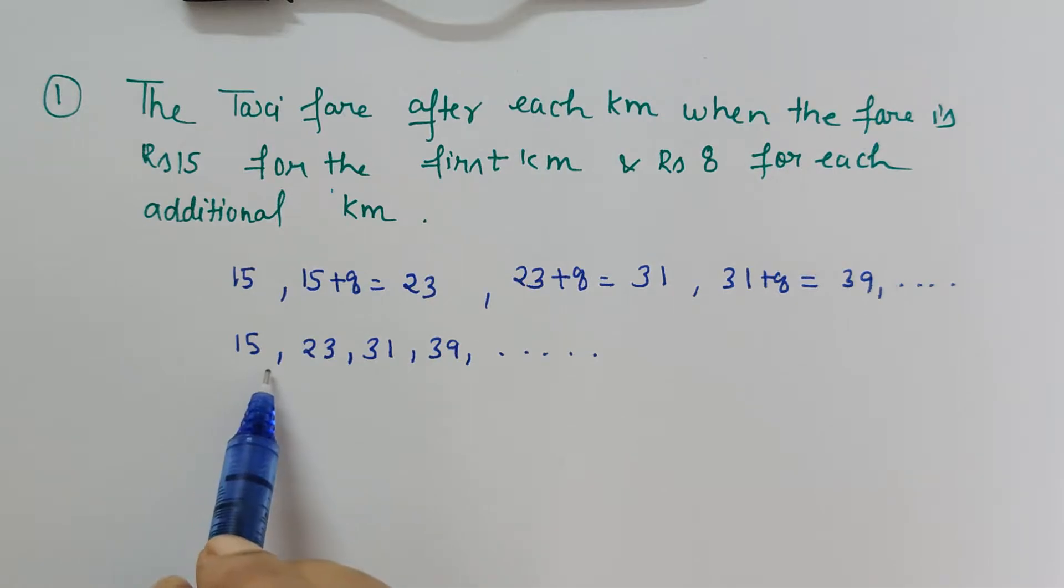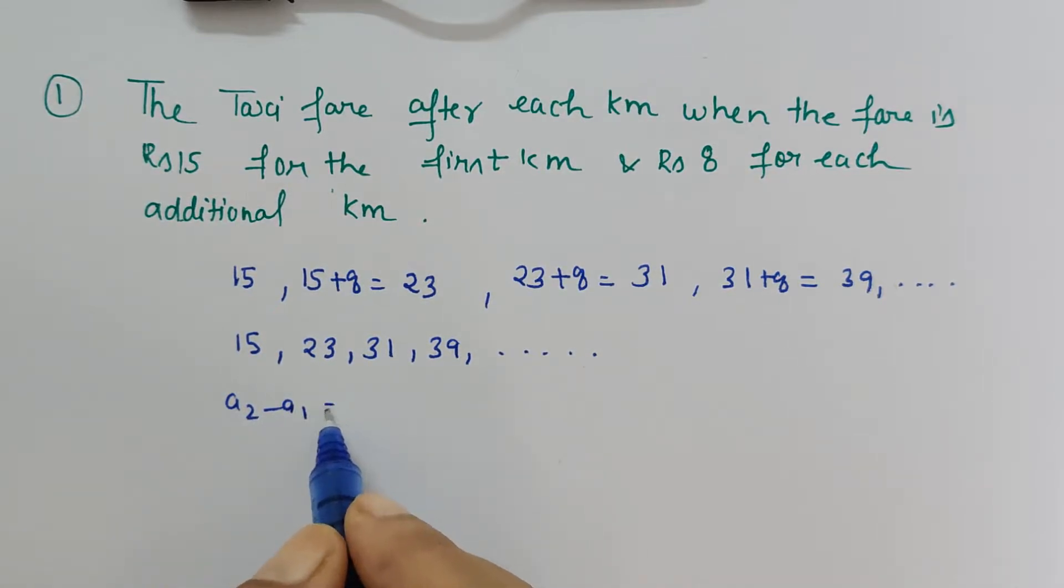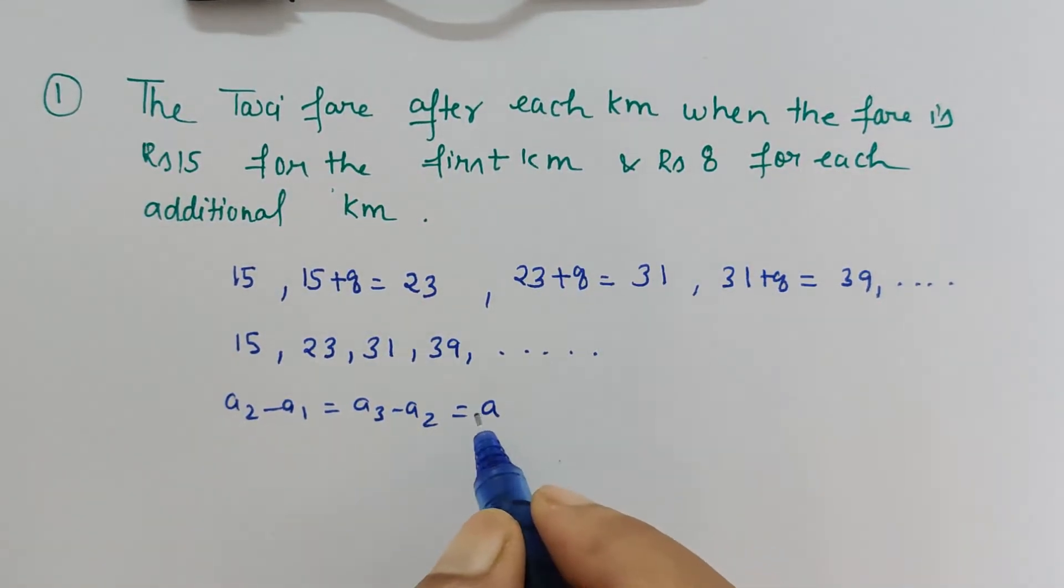So this is the sequence that we have got. Now let's check. As we know that a2 minus a1 should be equal to a3 minus a2, should be equal for all the terms. So that we have to check here.